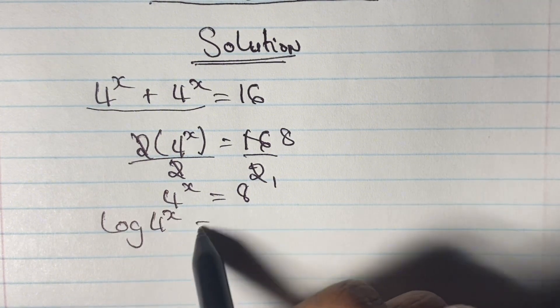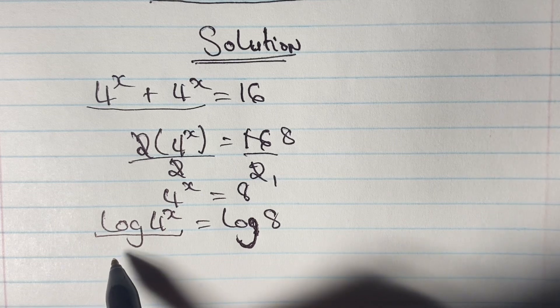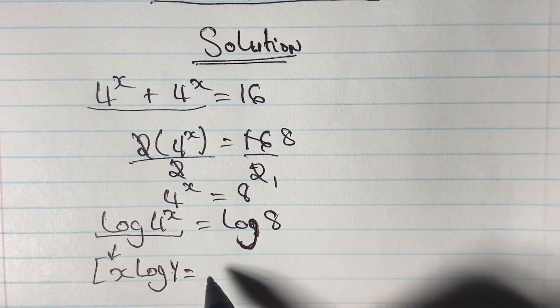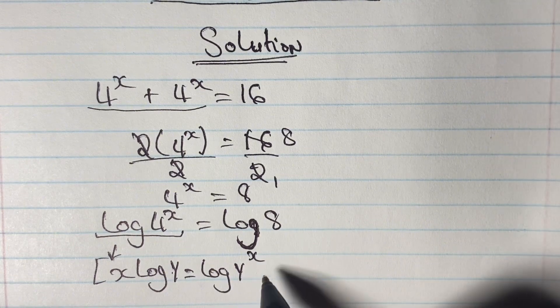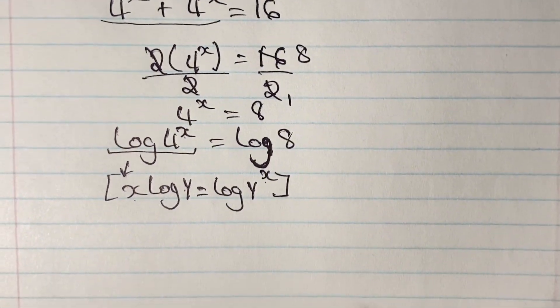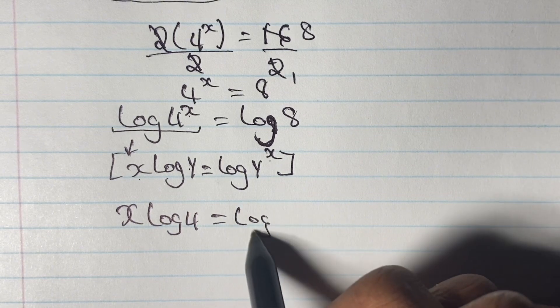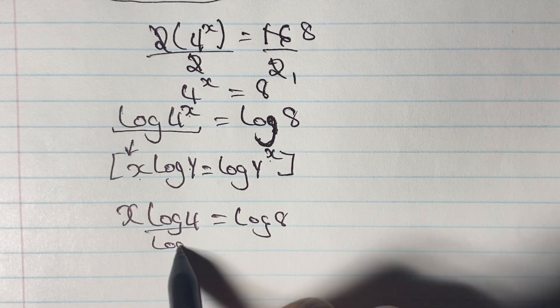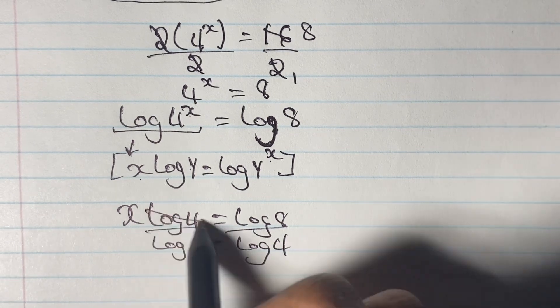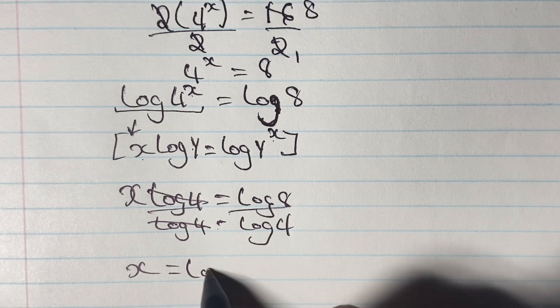Now using our log rule we can simply see that log 4x can be written with the following rule which is x log y is equal to log y to the power of x. So you can look at this rule and we're just going to rewrite our equation as follows. So that brings us to x log 4 is equal to log 8. Now here we can actually solve for x by dividing log 4 on both sides of the equation. So we would have log 4 over log 4 is equal to log 8 over log 4. Log 4 will be cancelled out on the left and therefore we are left with x is equal to log 8 over log 4.